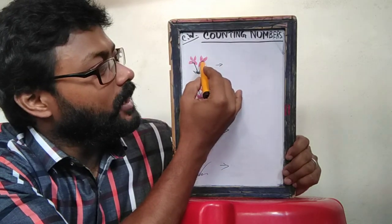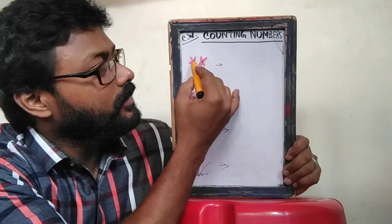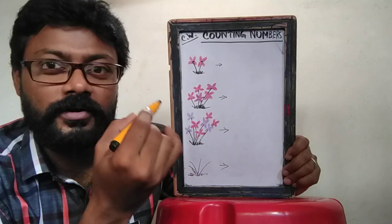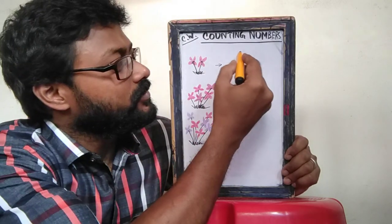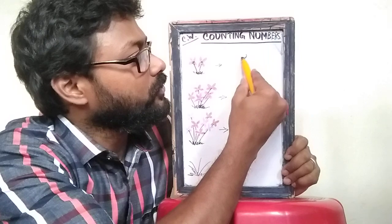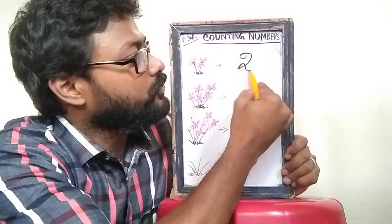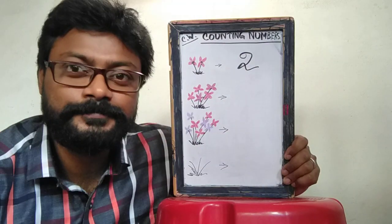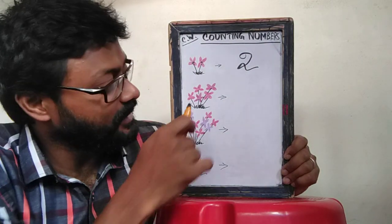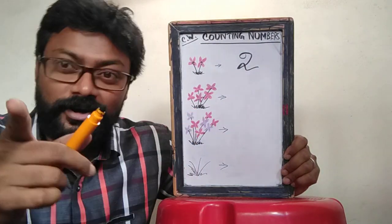There is 1 and 2. Two flowers are there. So we will have to write 2.